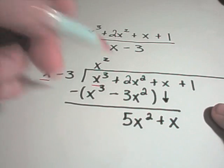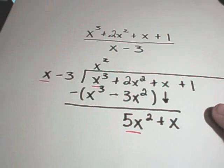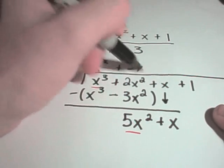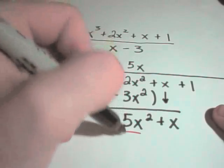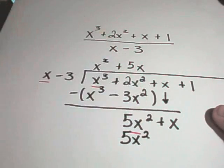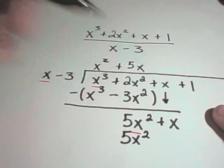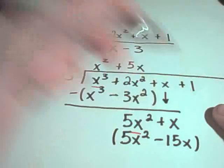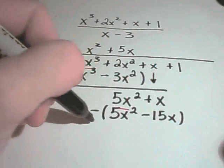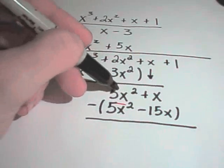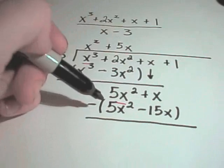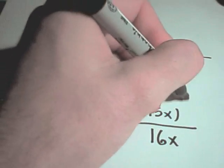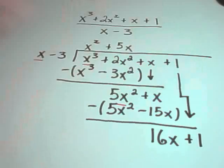And now I think x times what is 5x squared? Well, I would need a positive 5x to get that. Positive 5x times x is 5x squared, 5x times negative 3 is negative 15x. So again, I do my subtraction. My 5x squared will cancel out. I'll get x plus 15x, which is 16x. And now I drop down my positive 1.